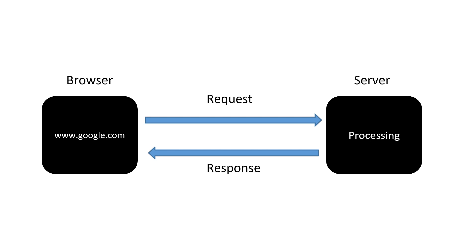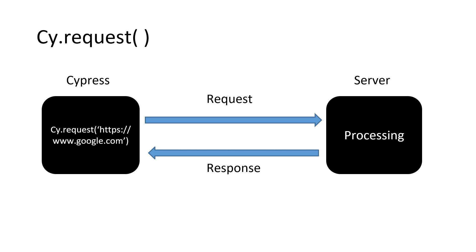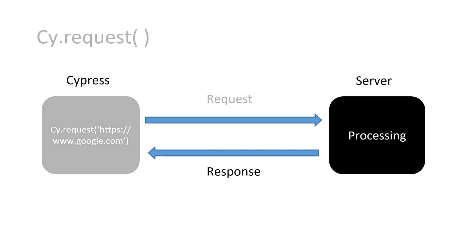When we talk about cy.request, we are explicitly asking Cypress to make a request. If we want to make any specific request we use the cy.request method and provide what request needs to be made. In our previous tutorials we made API requests through this method — we are explicitly telling Cypress to make this request, it goes to the server, and we get the response, such as a JSON payload.